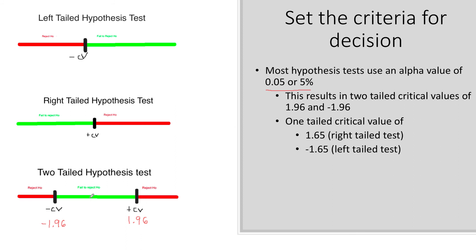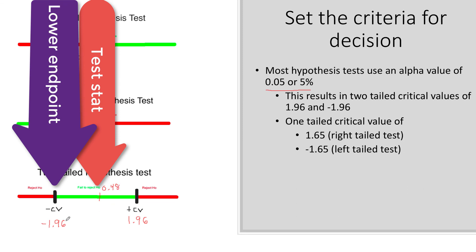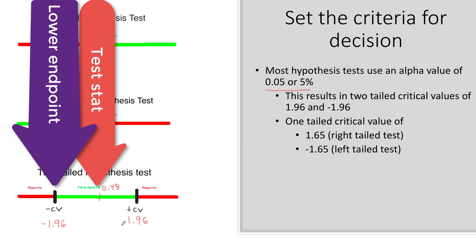I then consider this a number line. And I plot my test statistic on the number line. It's somewhere between the two. It's not important where, just that it falls between them.